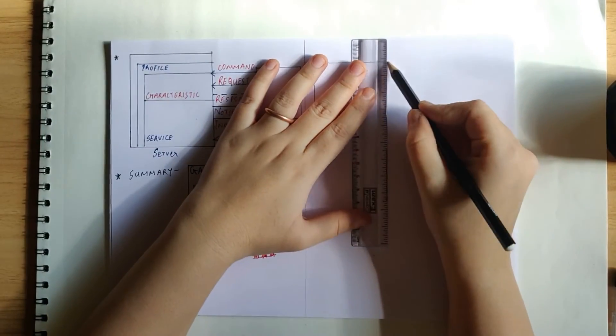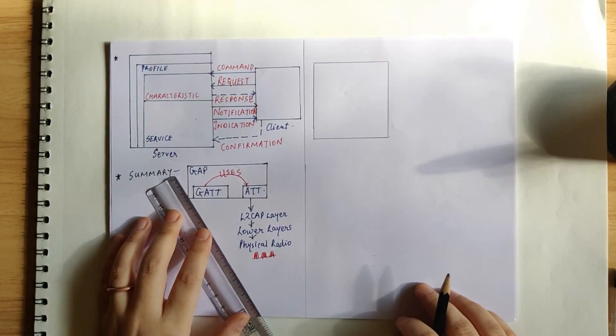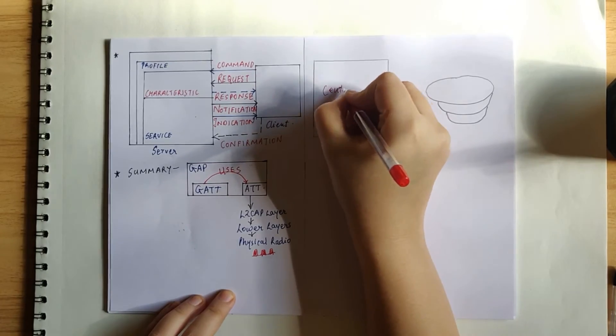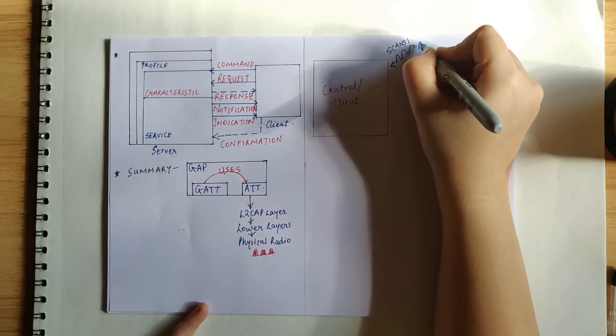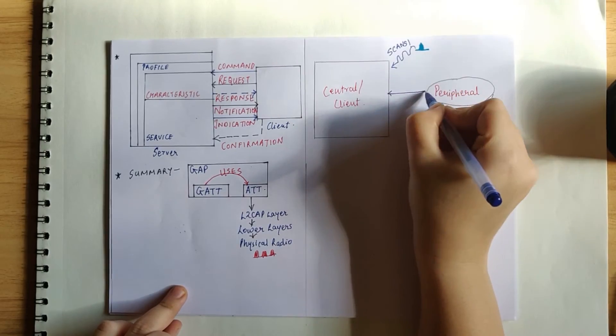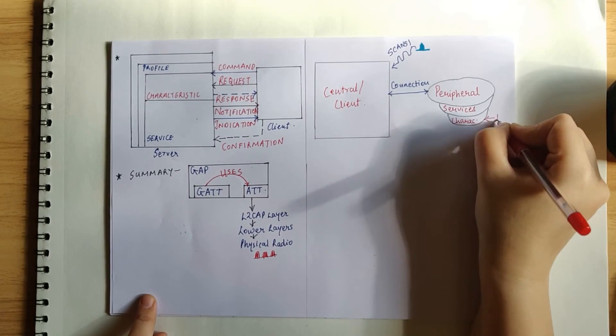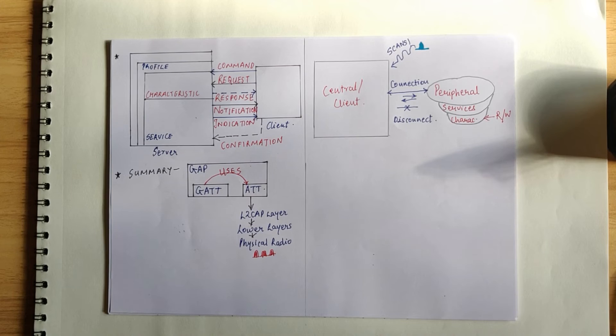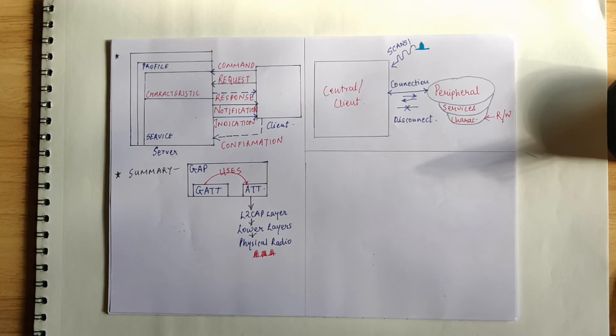Finally, let us summarize the steps which are required for connection establishment and data exchange between a central and a peripheral. Firstly, the central scans for the peripherals that are advertising. Then, it forms a connection with a particular peripheral. Then, it discovers the services on that particular peripheral. And then, it discovers the characteristics on the services of interest. Eventually, it will read or write values to the characteristics of interest. And in the end, it will obviously disconnect after it has completed data transfer.